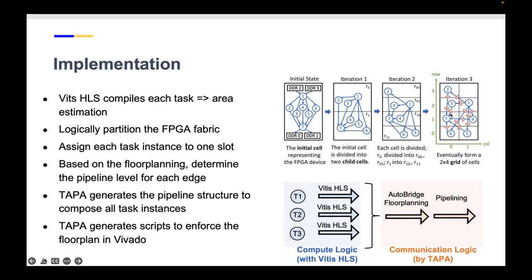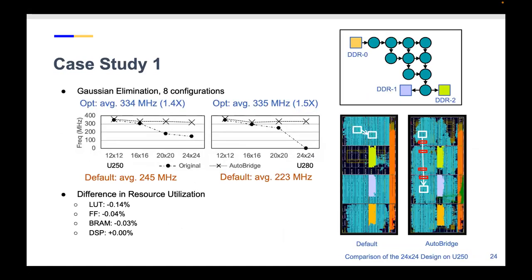This floorplanning has two levels of implications. First, we ensure that logic is properly spread across the whole device to remove local congestion. Meanwhile, for global connections we add adequate pipelining so they don't become the global critical path. These two factors combined can give us huge frequency improvement.